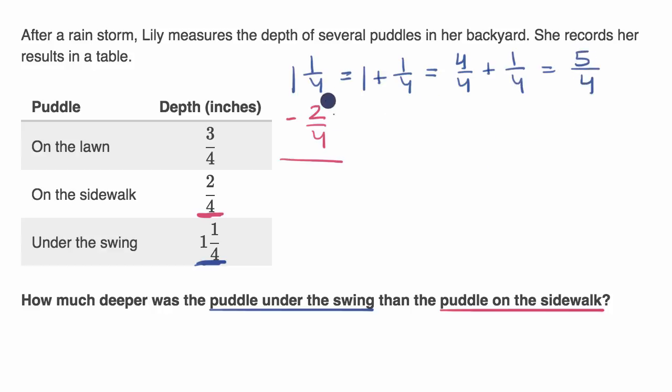So now you can view this as five fourths. This number is the same thing as five fourths minus two fourths. Let me rewrite it. Minus two fourths, and that's pretty straightforward. If I have five of something and I subtract two of it, I'm going to have three of that something. And in this case, I'm talking about three fourths. So this is going to be three fourths. So how much deeper was the puddle under the swing than the puddle on the sidewalk? Well, three fourths of an inch.